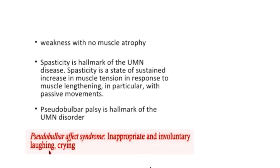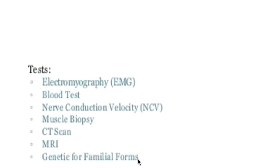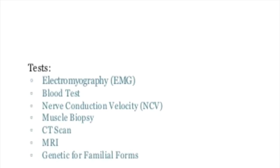What is the difference between bulbar and pseudobulbar palsy? Bulbar palsy is a lower motor neuron disorder that affects the brainstem, whereas pseudobulbar palsy is an upper motor neuron disorder that affects both the brainstem and spinal cord. Tests done for ALS include EMG, blood tests, nerve conduction study, muscle biopsy, CT scan, MRI, and genetic testing for the familial form, but none of them is diagnostic alone.